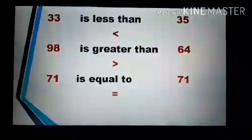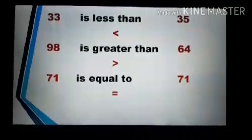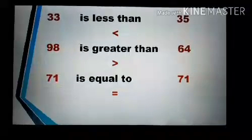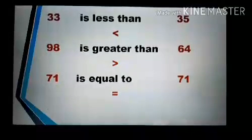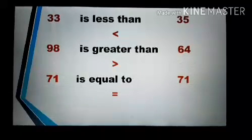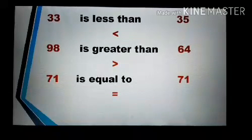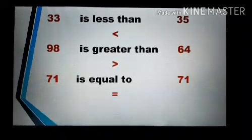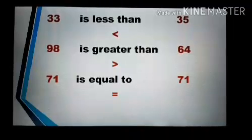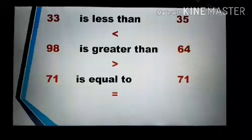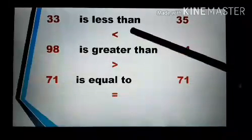Now we have to find out the smaller or greater number. Here we have 33 and 35. First of all we will compare the first digit of the numbers, which are the same. Then we will compare the second digit: 3 and 5. 3 is smaller than 5, so we can say 33 is less than 35. We use this symbol for less than.